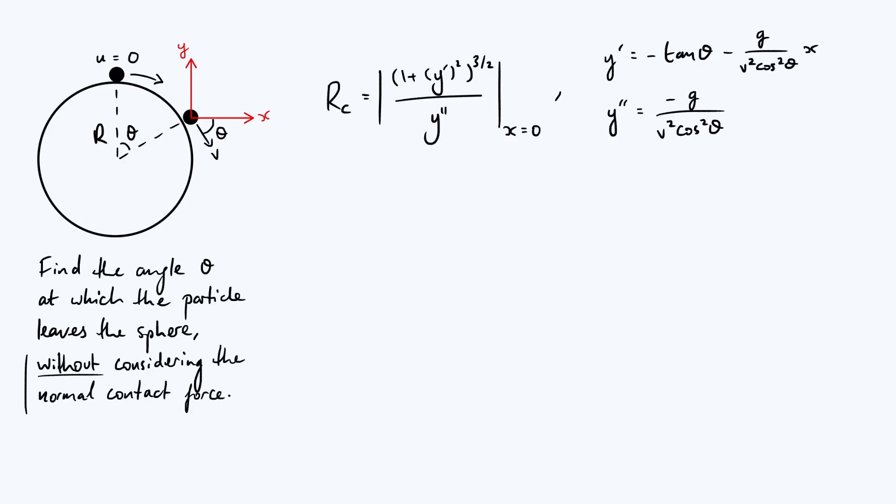Let's put these results together and figure out a simplified version of rc. I'm substituting these expressions in. It's the modulus of 1 plus something squared, that something is y dash. When we substitute x equals 0 the second term disappears, so it's actually 1 plus tan squared theta all to the power of 3 over 2, divided by the second derivative.